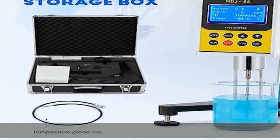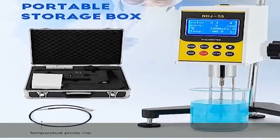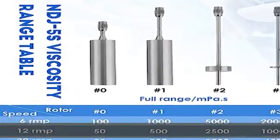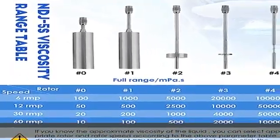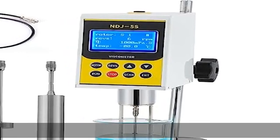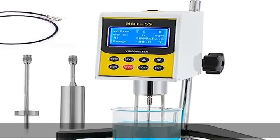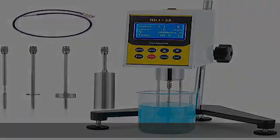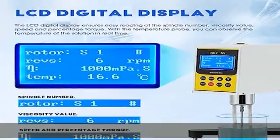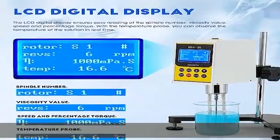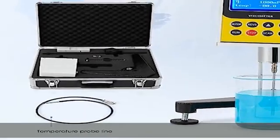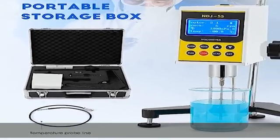Measurement error is plus or minus 3%, with 5 rotors: No. 0, 1, 2, 3, and 4, and 4 speeds: 6, 12, 30, and 60 RPM — which are composed of 20 combinations. You can determine viscosity as low as 1 MPa·s with the No. 0 rotor.